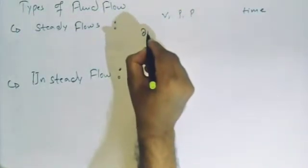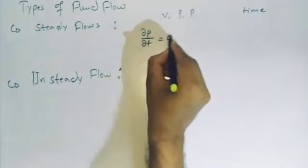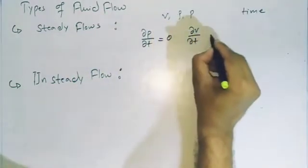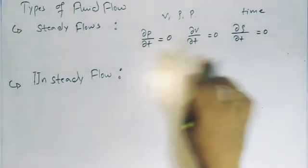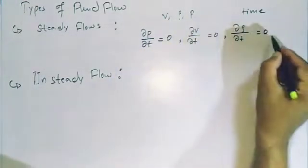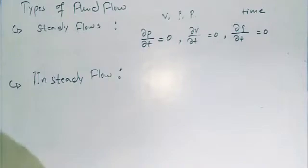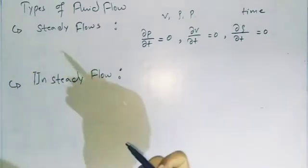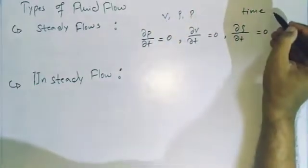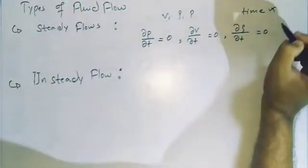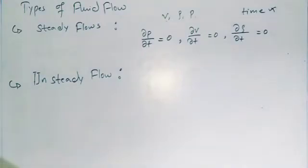Mathematically, steady flow is expressed as: ∂p/∂t = 0, ∂v/∂t = 0, and ∂ρ/∂t = 0. So steady flow is a flow in which the fluid characteristics such as velocity, pressure, and density do not change with respect to time. Now the next in the same category is unsteady flow.